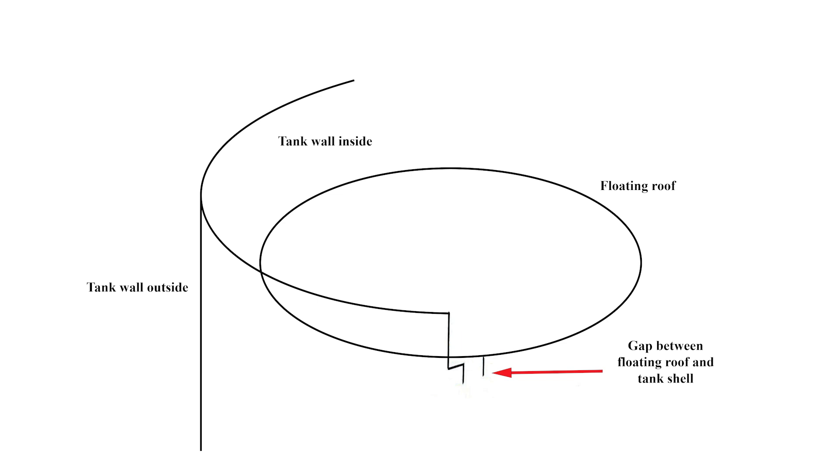If you wanted to intentionally generate hazardous sparking in this location, you could simply bond the tank shell to the floating roof with an ordinary conductor.